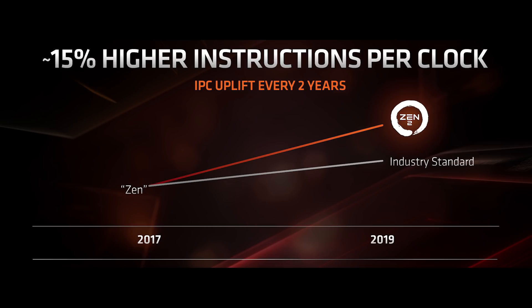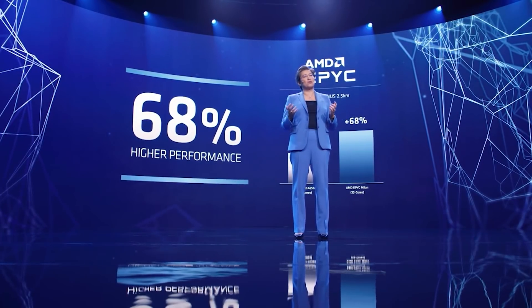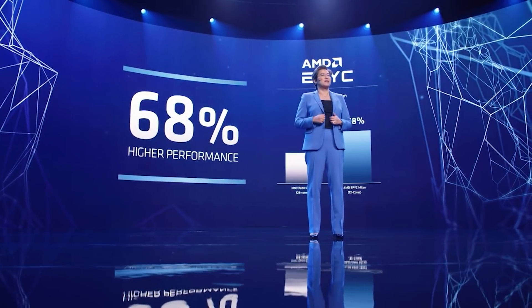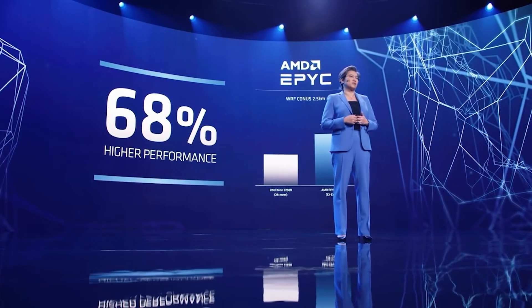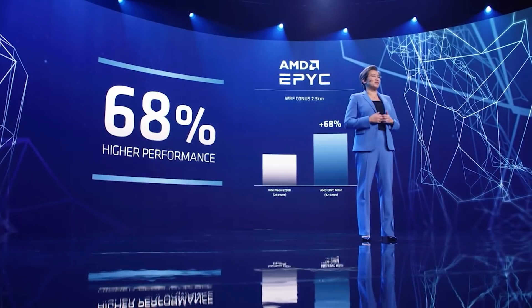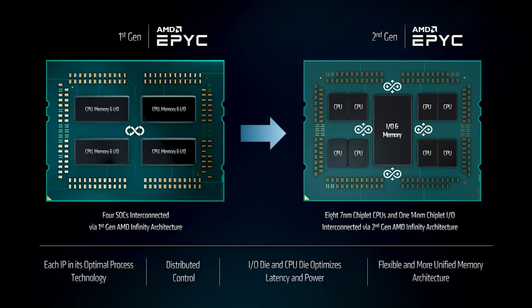It does heavily depend on what you're testing when talking about IPC, since different applications test the CPU in various ways. As I went into more extensively in my previous video, one of the big changes with Genoa is not necessarily just the IPC gains from one architecture to the next — it's going to be a lot of fundamental changes to the processor. For example, DDR5 alone is going to be a massive net benefit and is going to drastically increase performance in specific applications, particularly given memory bandwidth limitations at higher core counts. I still feel that 25% is a bit much for the IPC gain, but we'll wait and see.